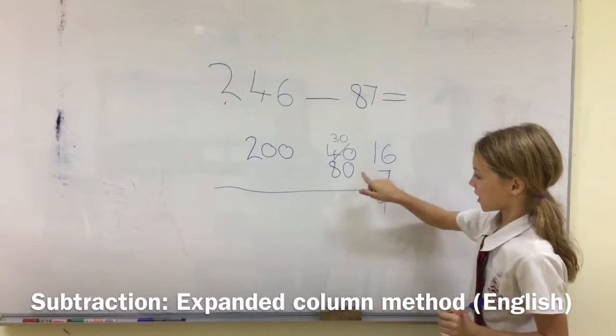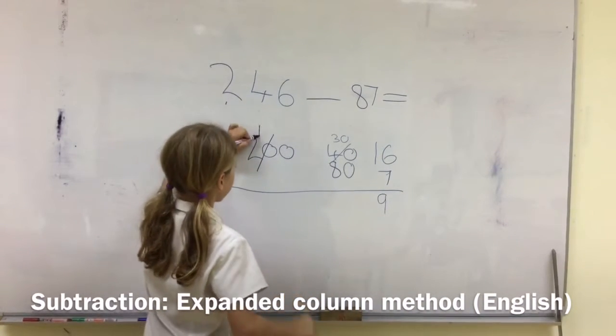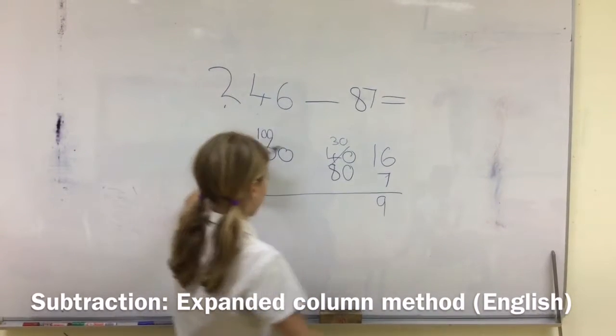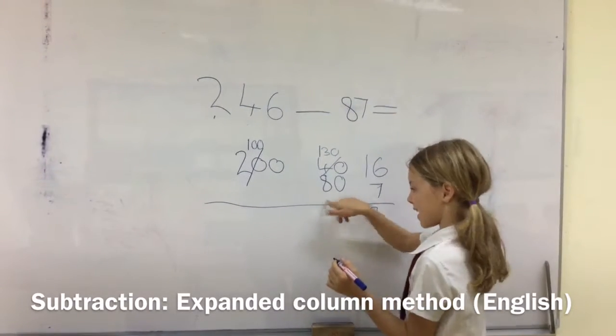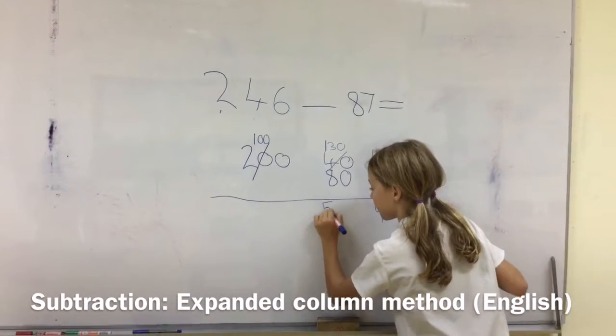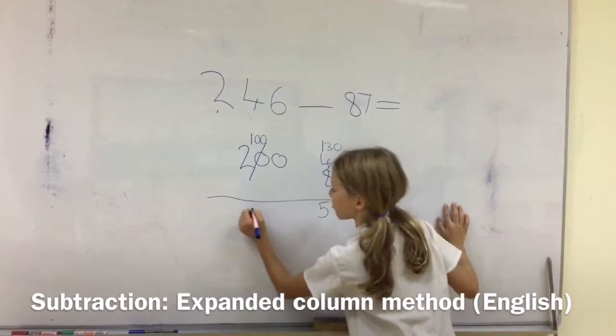And 30 subtract 80, we can't do that, so we take from 200, so that becomes 100, and that becomes 130. Subtract 80 equals 50. And 100 subtract 90 equals 100.